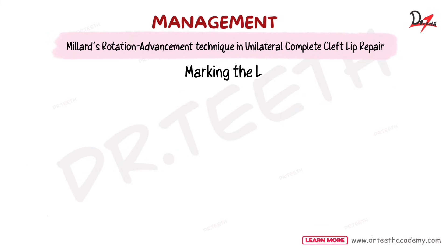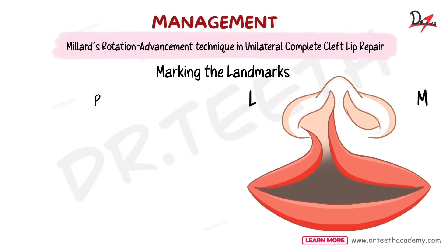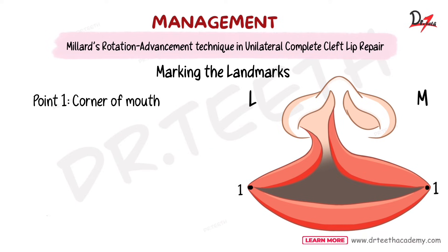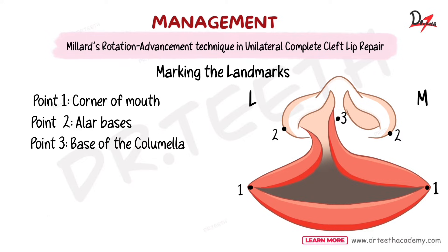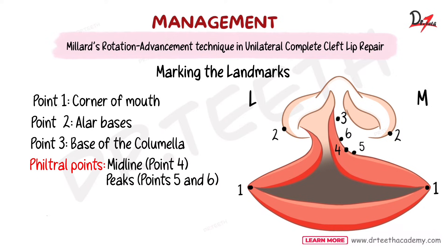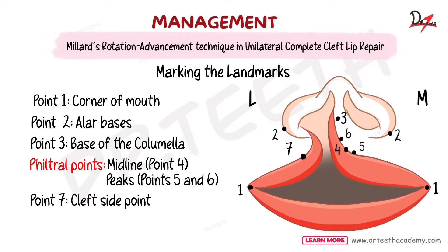As surgery begins, landmarks must be marked. Marking 1 is at the corner of the mouth; 0.2 is at the alar base; 0.3 is at the base of the columella. Marking 0.4 is the center of the philtrum, and 0.5 and 0.6 are the peaks of the philtrum. Marking 0.7 is on the cleft side, identified by locating the prominent white roll and sufficient vermilion thickness.